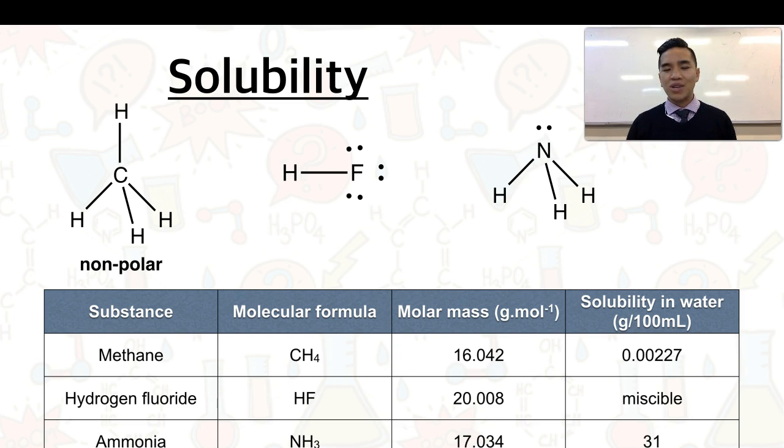And we already know that to be true. Have a look at hydrogen fluoride. It is completely miscible, so that would suggest that hydrogen fluoride is a polar molecule. And ammonia also with quite a decent solubility, we could also suggest is another polar molecule.